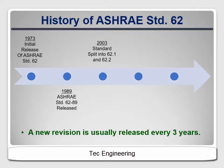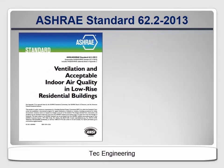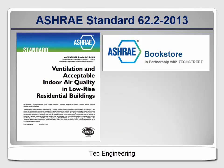The version we'll use for the examples in this course was released in 2013. It's very similar to the current version which was released in 2016. You can purchase any of the six versions released from 2003 to 2016 from ASHRAE at their website, techstreet.com. As of early 2017, the prices ranged from $37 to $93, depending on the year and the document format — printed, downloaded, or both.